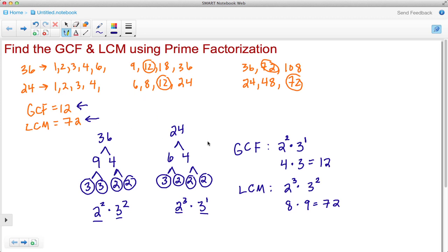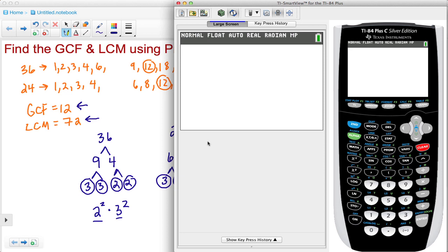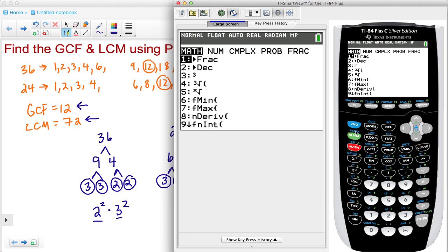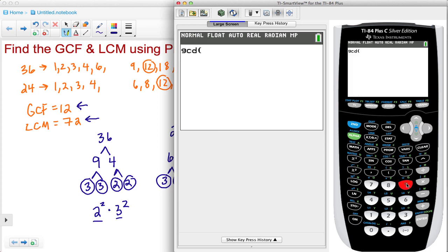And then one last thing is we want to call up the calculator and we're just going to verify these answers using the TI-84 plus. To do that we're going to go down to math and then we're going to click the right arrow to go over to num. And then let's do the GCF first here. They're saying GCD. GCD stands for greatest common divisor. Divisors and factors are the same thing.